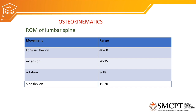Extension range is from 0 to 20–35 degrees. Rotation is very less in the lumbar vertebral spine compared to thoracic and cervical, because the facet alignment is nearly 90 degrees to the horizontal plane and faces each other more in the sagittal plane, so rotation will be less. Side flexion is from 0 to 15–20 degrees. The maximum range available at the lumbar vertebral spine is forward flexion and the minimum range is rotation.